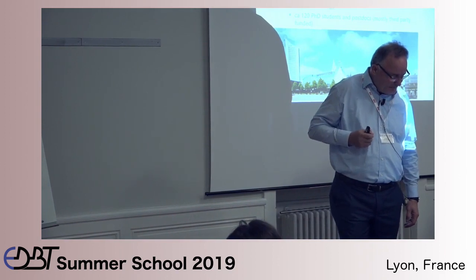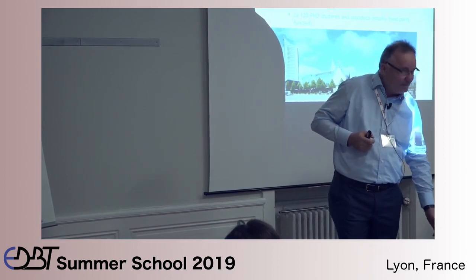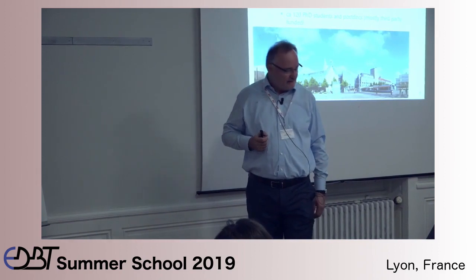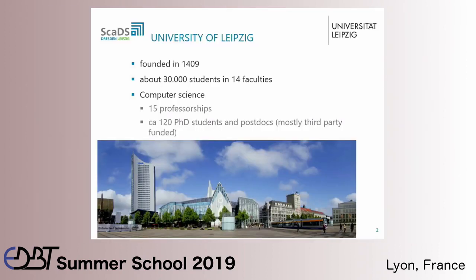Before I start with the technical topic, a brief mention of our university, since most of you are not from Germany. The University of Leipzig was founded in 1409 — it's 610 years old, the second oldest university in Germany. We have a new campus in the city of Leipzig. The university building at Augustusplatz resembles an old church that was destroyed in 1968. We have about 30,000 students and 14 faculties. In computer science we have about 1,200 master and bachelor students.